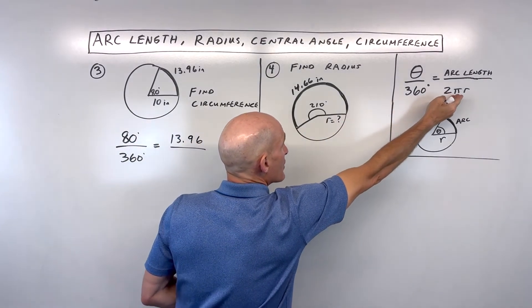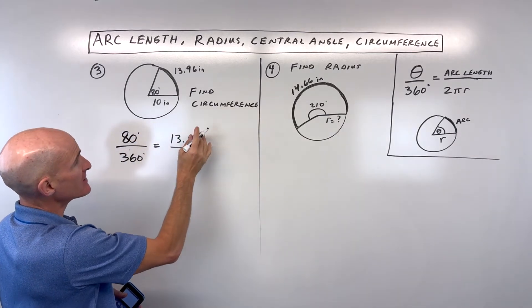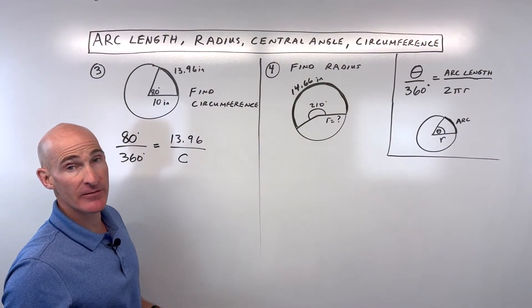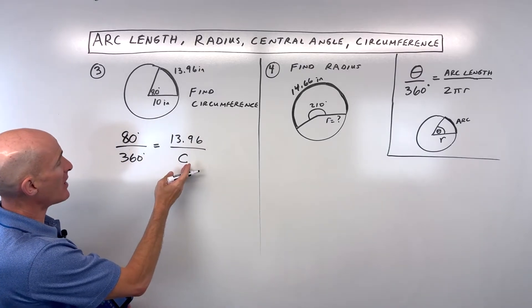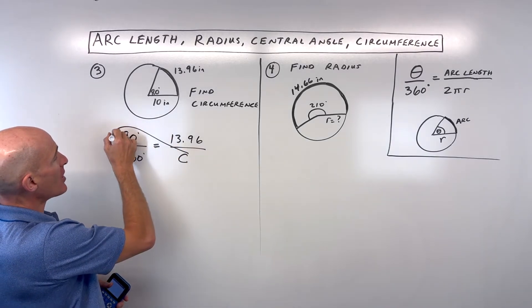Now, 2πr is the whole circumference. In this case, because we're looking for the circumference, I'm just going to call it c for circumference. That's the same as the 2πr. We're going to do our cross product.